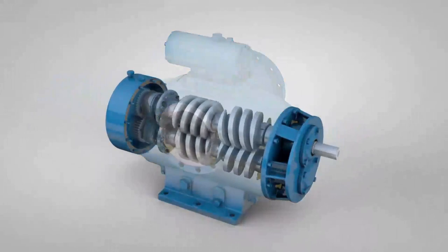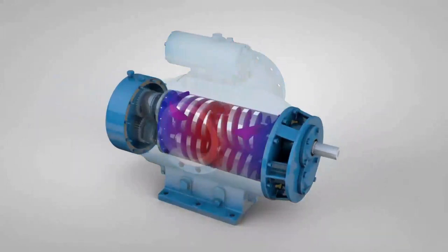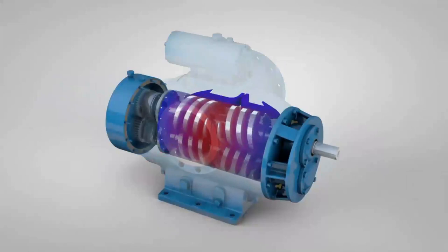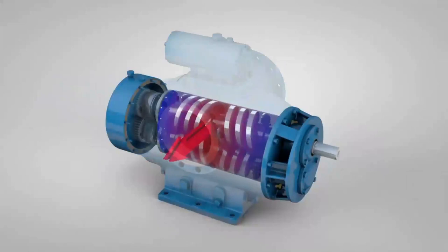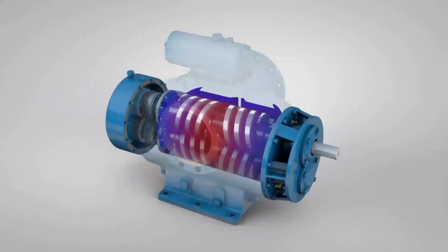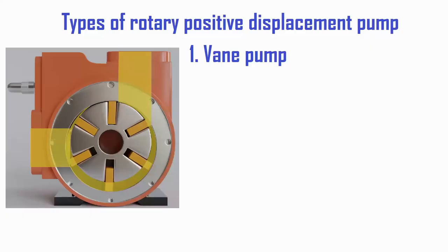The characteristics of a rotary positive displacement pump generally include a low flow rate but with a fairly high pressure requirement, and it can handle less clean liquids. There are seven types of rotary positive displacement pumps.